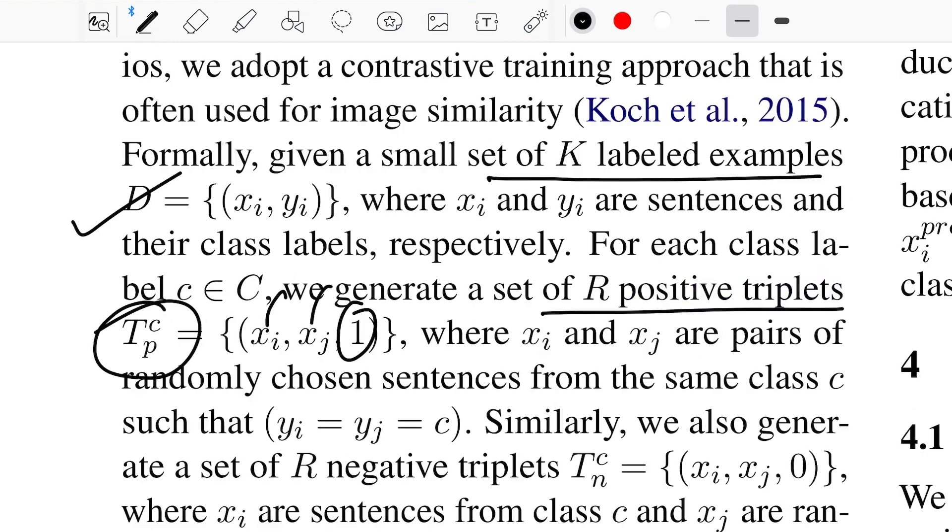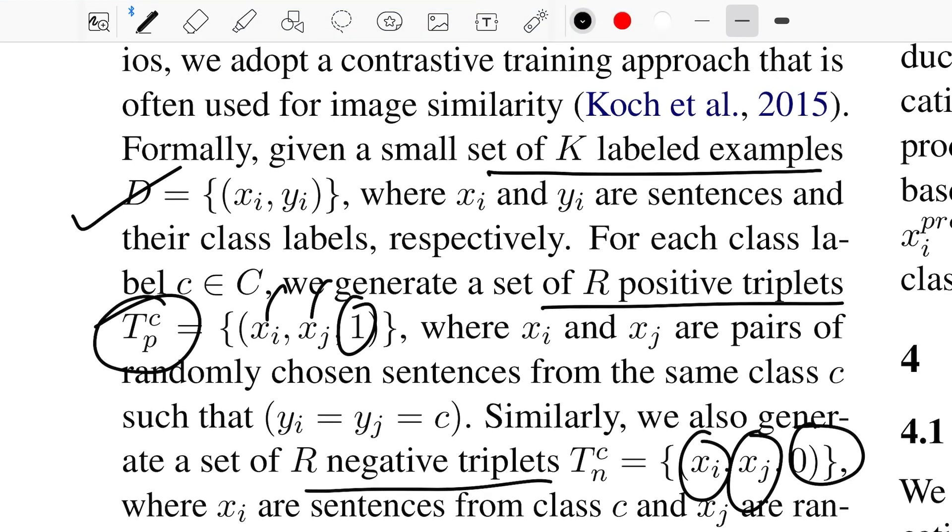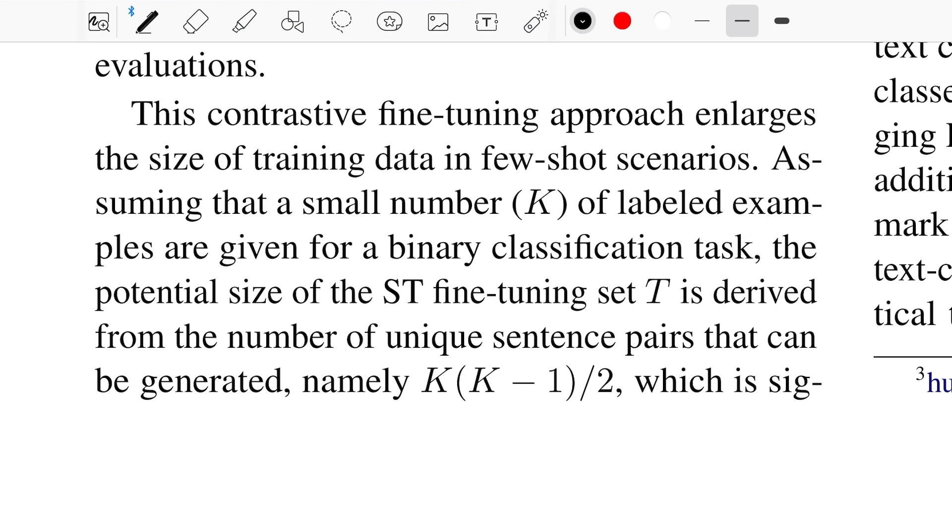If xi and xj are from different classes, then this makes up your negative triplet, and that's why the third value over here is zero. For creating this dataset where you have a pair of positive samples and a pair of negative samples, consider a scenario of binary classification.